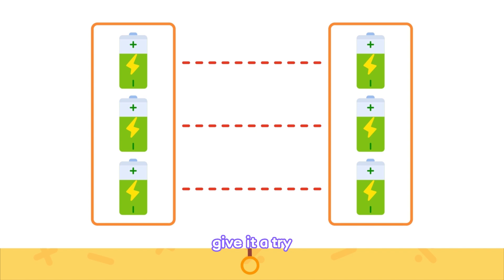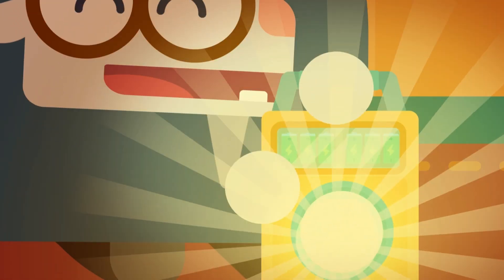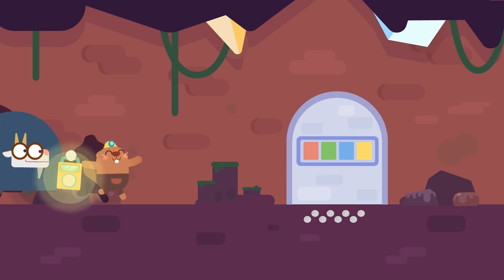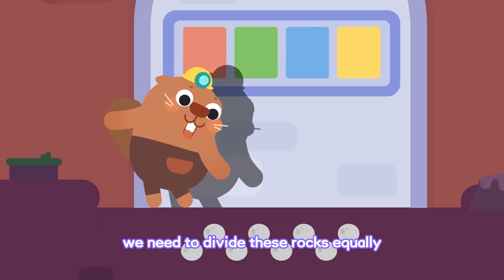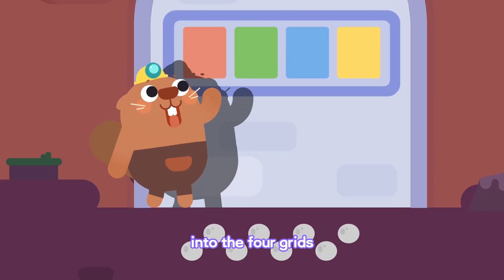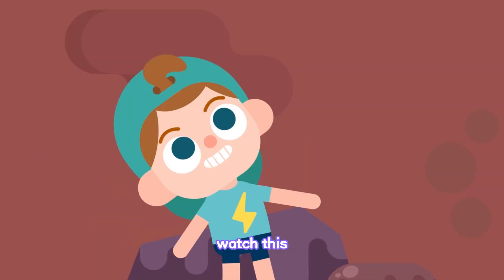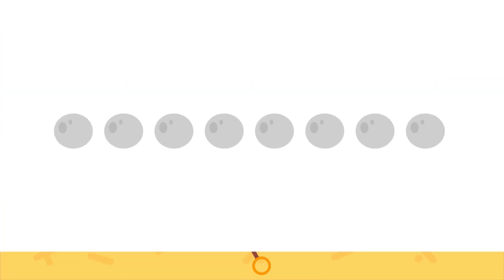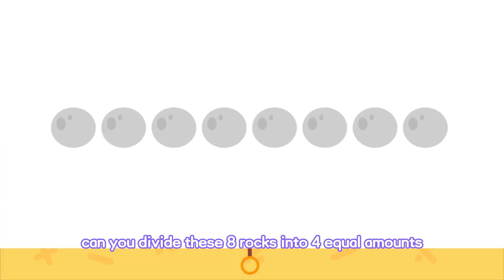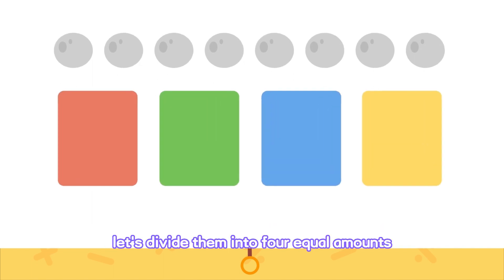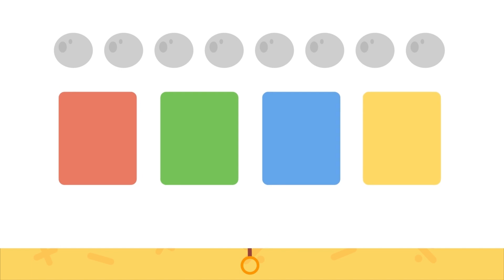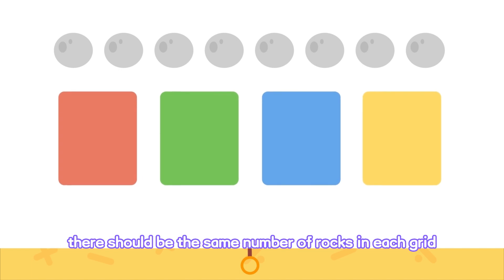Give it a try! We need to divide these rocks equally into the four grids. Watch this! Can you divide these eight rocks into four equal amounts? Let's divide them into four equal amounts. There should be the same number of rocks in each grid.